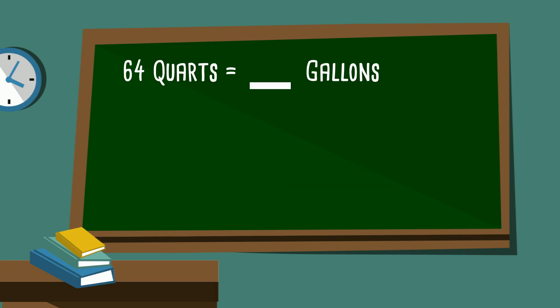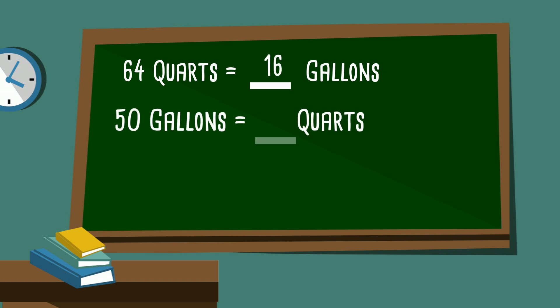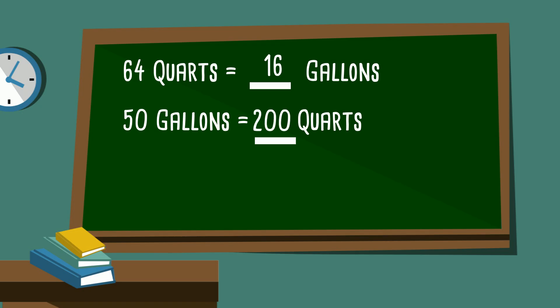With these next examples, I'm going to show the problem and then you try to work it, and I'll provide the answer. 64 quarts equals how many gallons? That's 16. 50 gallons equals how many quarts? That would be 200.